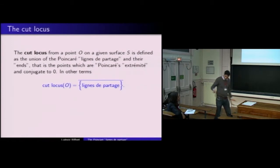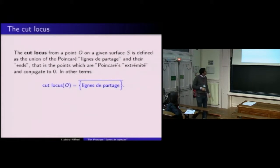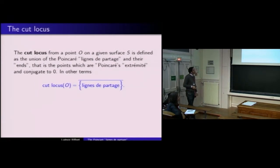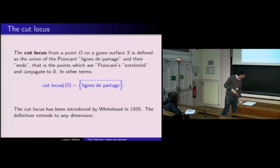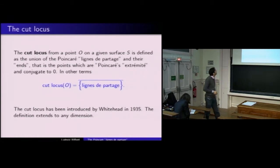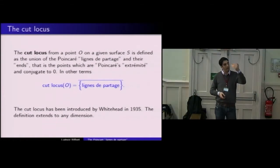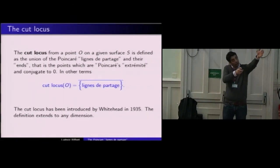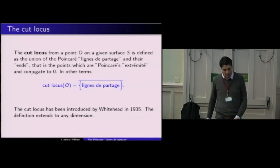Aujourd'hui, on ne parle plus de lignes de partage — on parle de 'cut locus'. Le cut locus est défini comme l'adhérence des lignes de partage, c'est-à-dire l'union des lignes de partage et de leurs extrémités. C'est un objet qui a été introduit par Whitehead en 1935. Ces définitions s'étendent en toutes dimensions : étant donné un point O fixé, il s'agit de l'ensemble des points P pour lesquels il existe au moins deux géodésiques minimisantes pour aller de O à P.